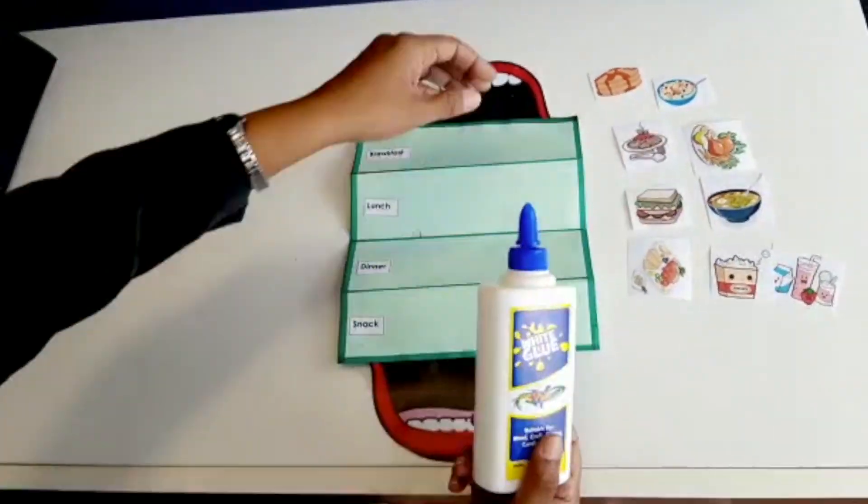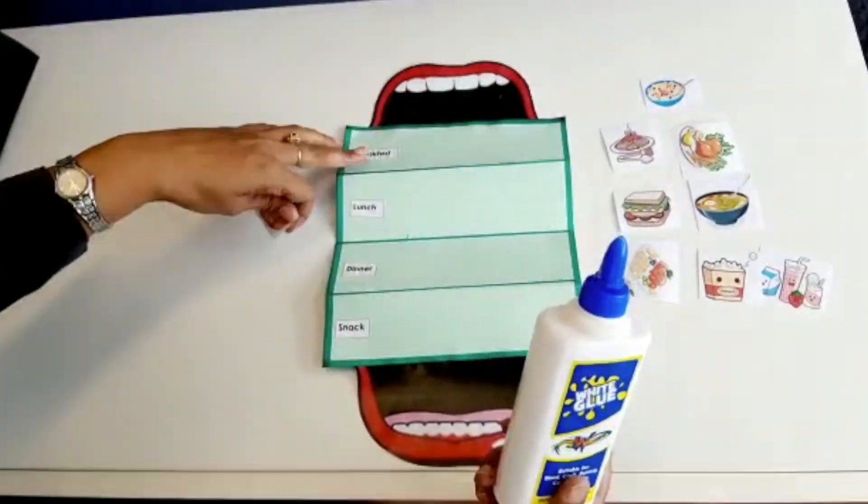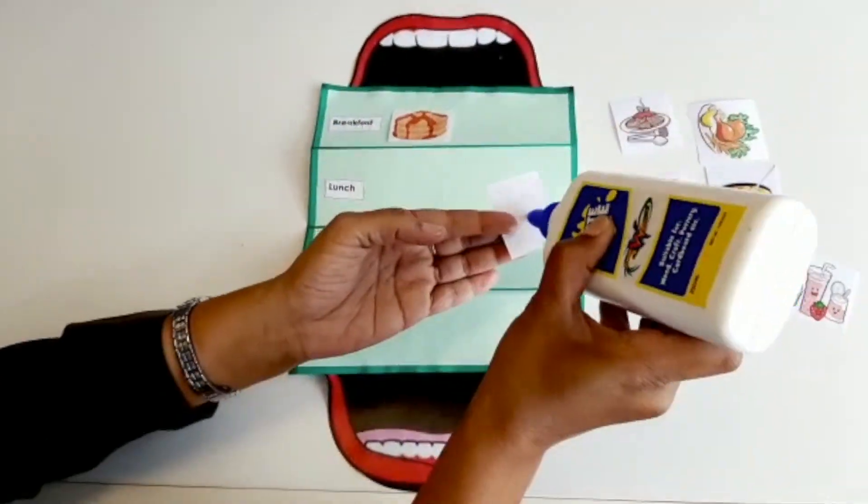Parents will provide clues and children will choose the appropriate picture to stick next to each meal.